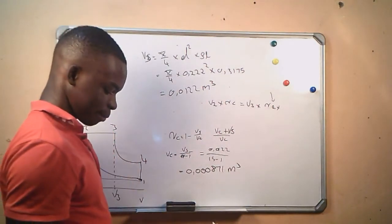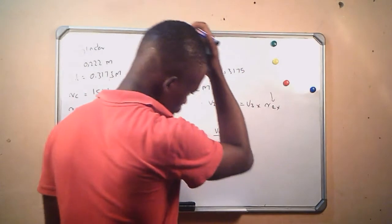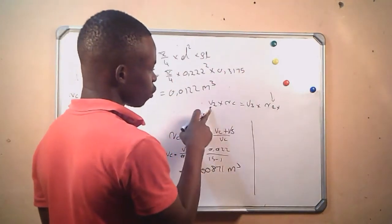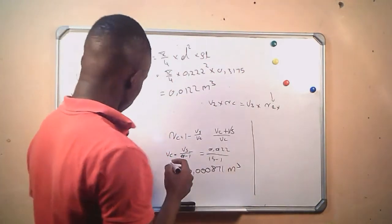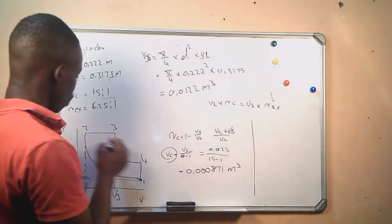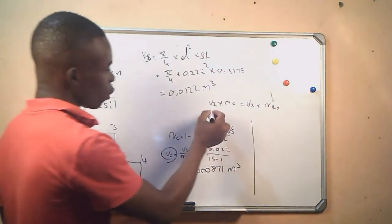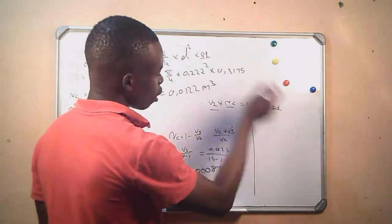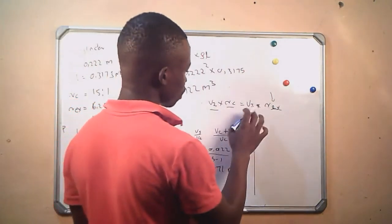From here, since our clearance volume equals V2, and we now have V2 and both ratios, we can use this formula to find V3.